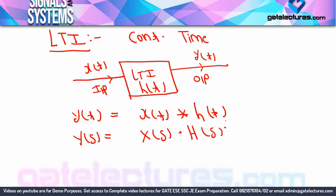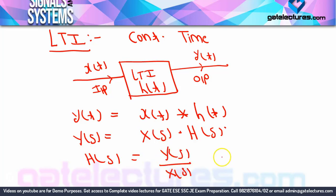If I extend this analysis further, H(s) becomes Y(s) divided by X(s). This H(s) is called the transfer function of the system. So the definition of transfer function of the system is: Laplace transform of output, that is Y(s), divided by Laplace transform of input, that is X(s), with all initial conditions equal to zero. In simple terms, Y(s) upon X(s) is your transfer function of the system.